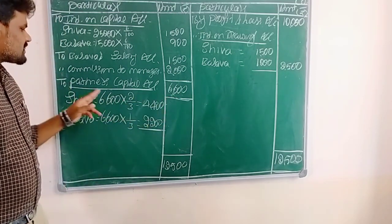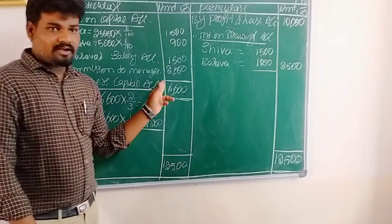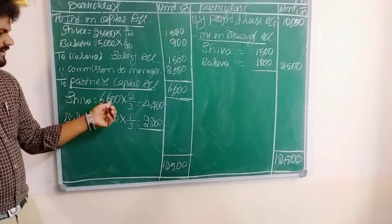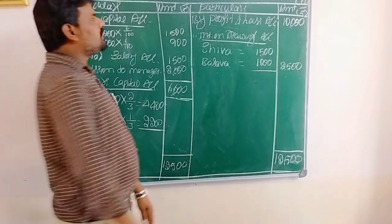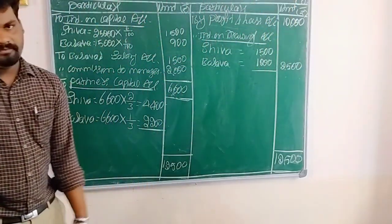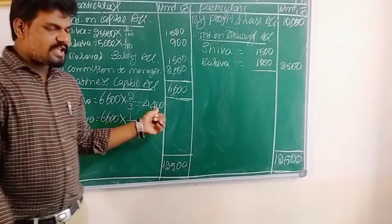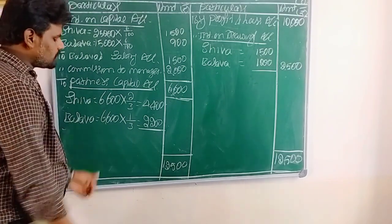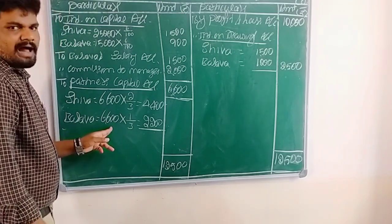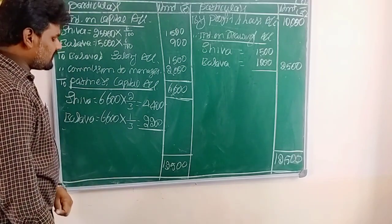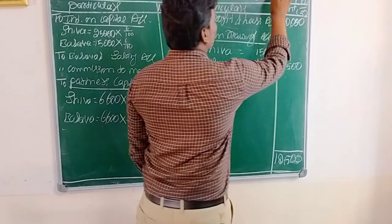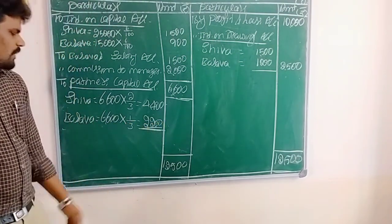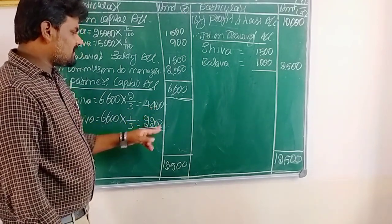We need to distribute 6,600 among the two partners — Shiva and Basava — according to their capital accounts. The profits and loss sharing ratio is 2 is to 1, so 2 plus 1 equals 3. Shiva gets 2 by 3 share: 6,600 into 2 divided by 3 equals rupees 4,400. This is Shiva's share of profits. Next, Basava gets 1 by 3 share: 6,600 into 1 divided by 3 equals rupees 2,200. This is Basava's share. So 4,400 plus 2,200 equals 6,600. These calculated balances we record in the inner column.